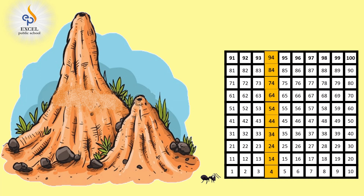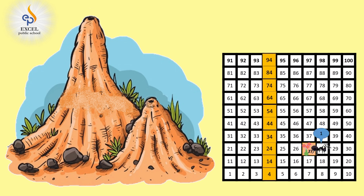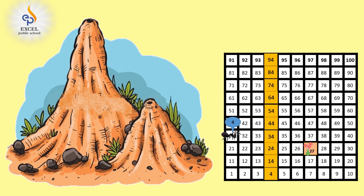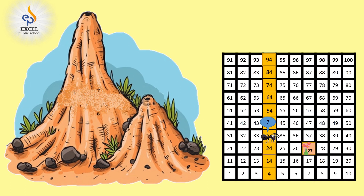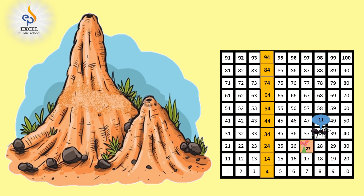Children, now I have completed the painting job. I would like to keep flower vases in a few of the rooms. Let's start from room number 27. I place the first vase here. Now, I want to keep the next vase in the 11th room from room number 27. So, I count as 1, 2, 3, 4, 5, 6, 7, 8, 9, 10 and 11. I have reached room 38 and I am going to place the flower vase here.